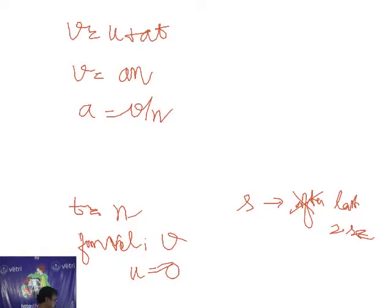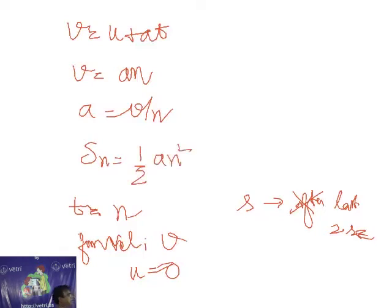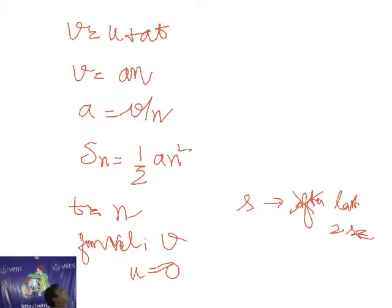What is the distance covered in n seconds? Since the body starts from rest, the distance covered in n seconds is s_n equals half a n squared. The distance covered in n minus 2 seconds is also needed.